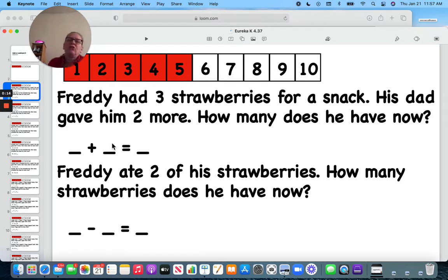Freddy had three strawberries for a snack. His dad gave him two more. How many does he have now? We're also going to be practicing some other math problems. So we know that he had three, he's going to have two more. Three and two is five.